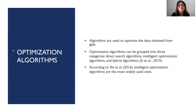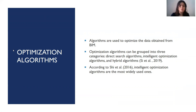Algorithms are widely used methods to achieve building energy performance optimization. Generally, algorithms are used to optimize data obtained from BIM. As BIM is compatible with many data exchange formats and tools, algorithms can be easily applied. Optimization algorithms can be grouped into three main categories: direct search algorithms, intelligent optimization algorithms, and hybrid algorithms. Intelligent optimization algorithms are the most widely used ones.